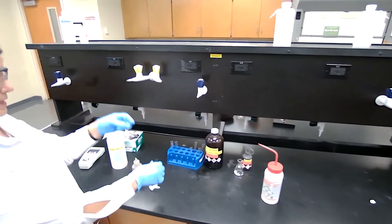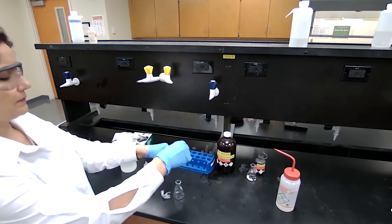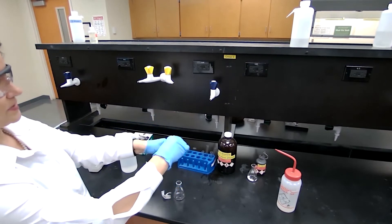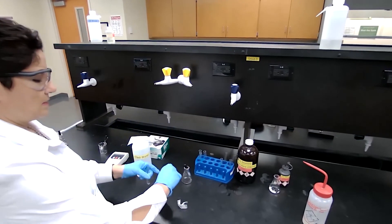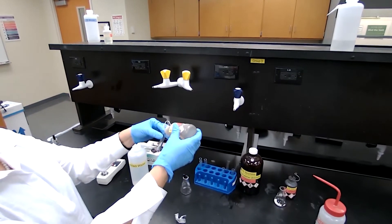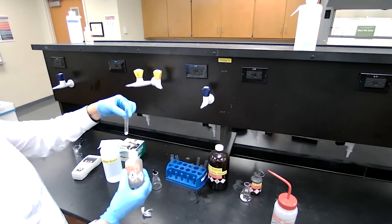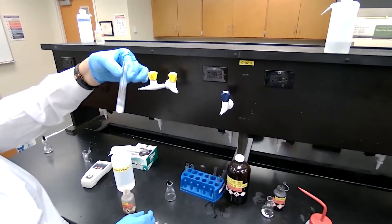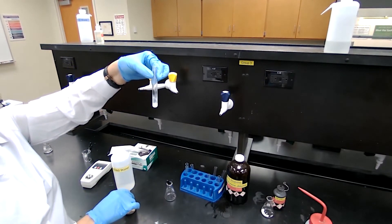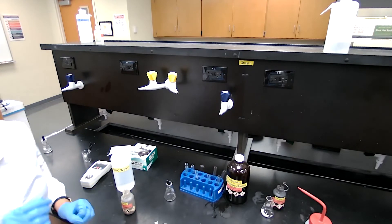For the silver nitrate test, we take the sample, add a few drops of the sample into a test tube. Just anywhere between two to five drops would work. And add 5% silver nitrate solution. Formation of the white precipitate indicates that we have the alkyl halide as a product.